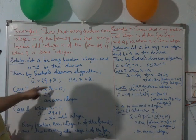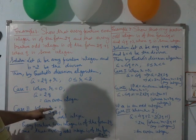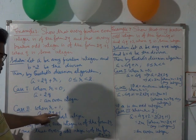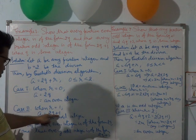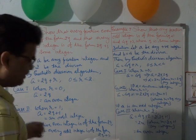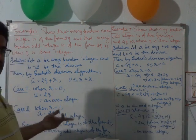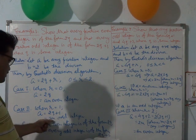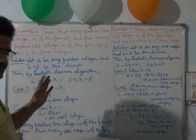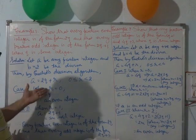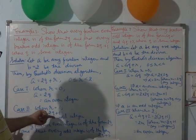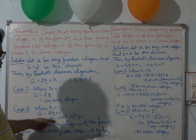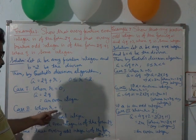In case 2, when remainder R is equal to 1, placing 1 here we get A equal to 2q plus 1. This is not a multiple of 2, and we know that any number which is not a multiple of 2 is an odd integer. So A equal to 2q plus 1 will be an odd integer. Hence any positive even integer is of the form 2q and every positive odd integer is of the form 2q plus 1.